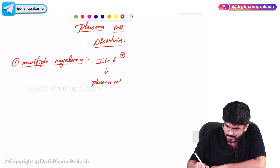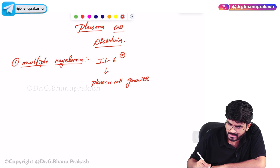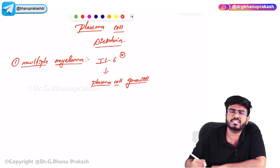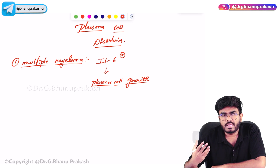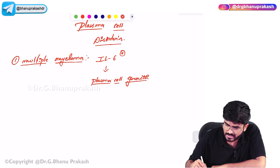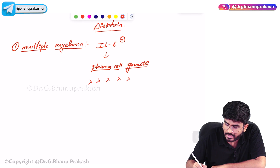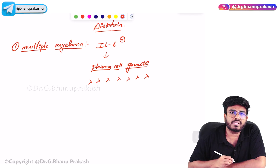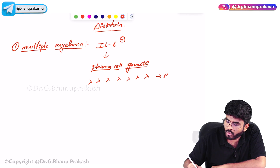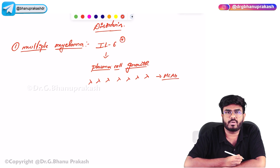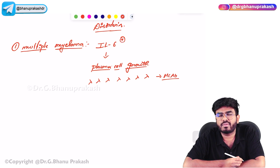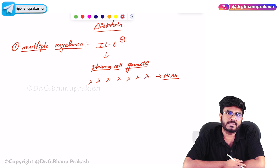Plasma cell growth is too much — the plasma cells are growing excessively. These plasma cells produce antibodies, but all antibodies are of one single type. They are all monoclonal antibodies, which lack antigenic diversity.